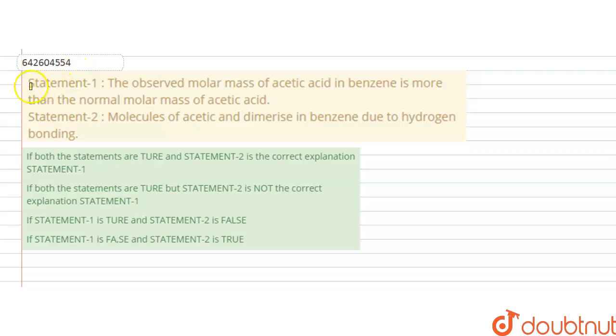Hello students, the question is Statement 1: The observed molar mass of acetic acid in benzene is more than the normal molar mass of acetic acid. And Statement 2: Molecules of acetic acid dimerize in benzene due to hydrogen bonding.